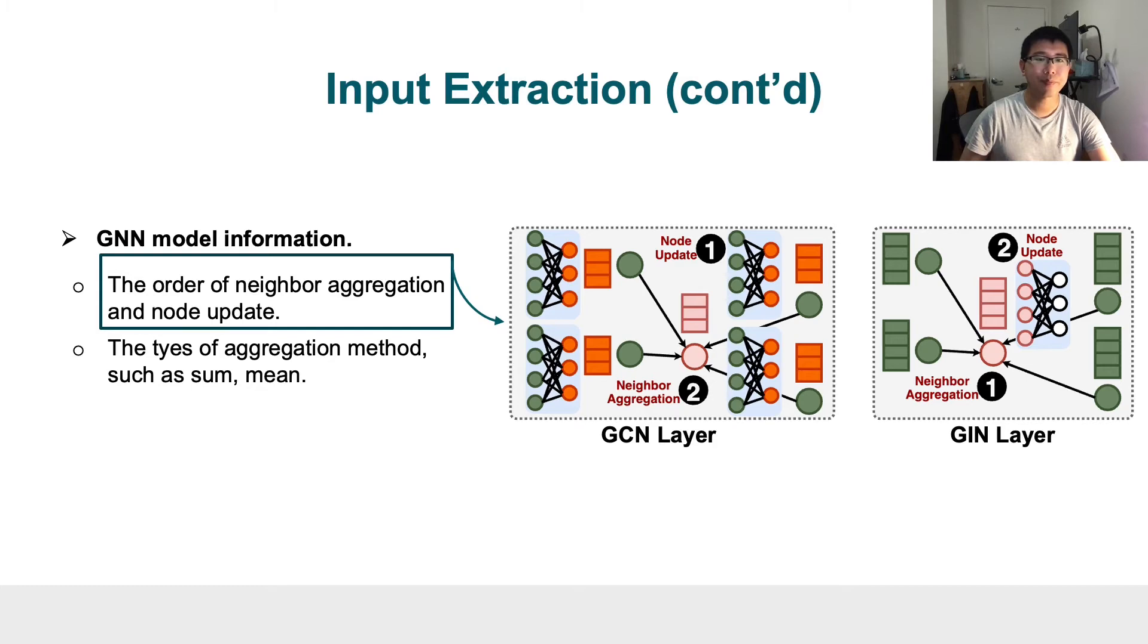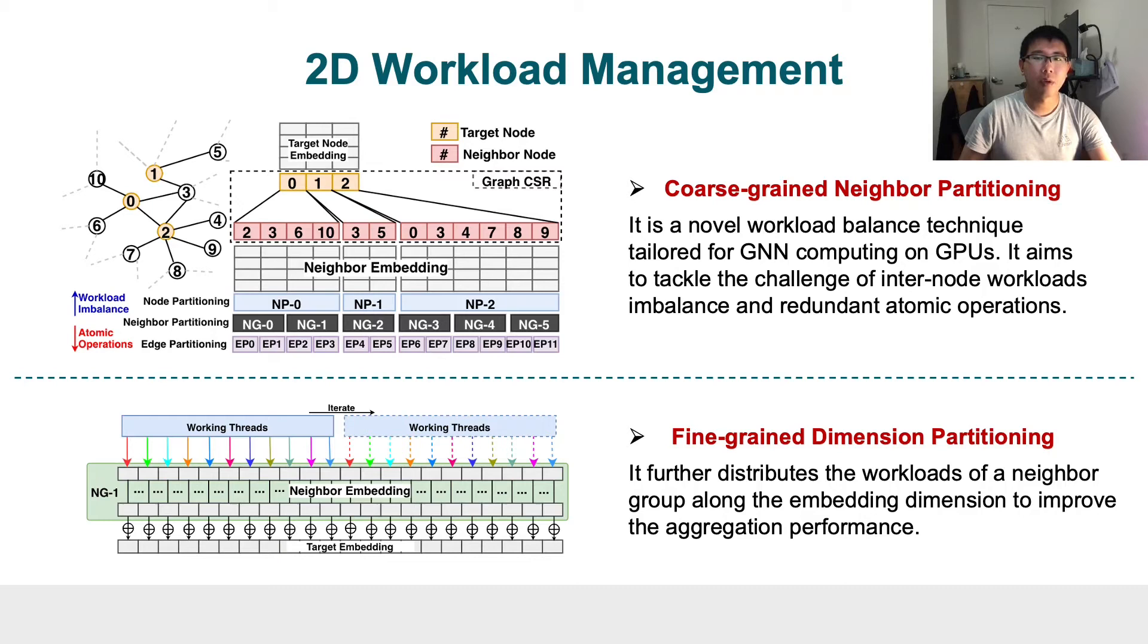Let's move on to our key kernel-level design. We start with 2D workload management. The first technique we want to introduce is cross-grained workload partitioning. It is a novel workload balance technique tailored for GNN computation on GPUs. It is highly configurable in terms of its parallelism granularity, such that we can reduce workload imbalance from coarse-grained node partitioning and synchronization overhead from fine-grained edge partitioning.